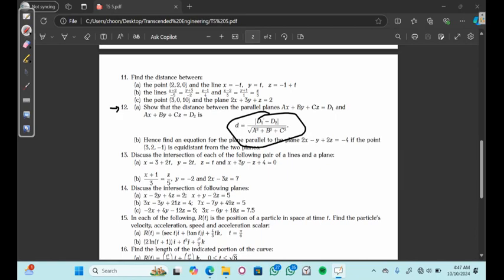We have to show that the distance is given by this expression, which is a rational expression whose numerator is the absolute value of d1 minus d2. Then the denominator is that radical, that's a squared plus b squared plus c squared. This is a pretty interesting question.